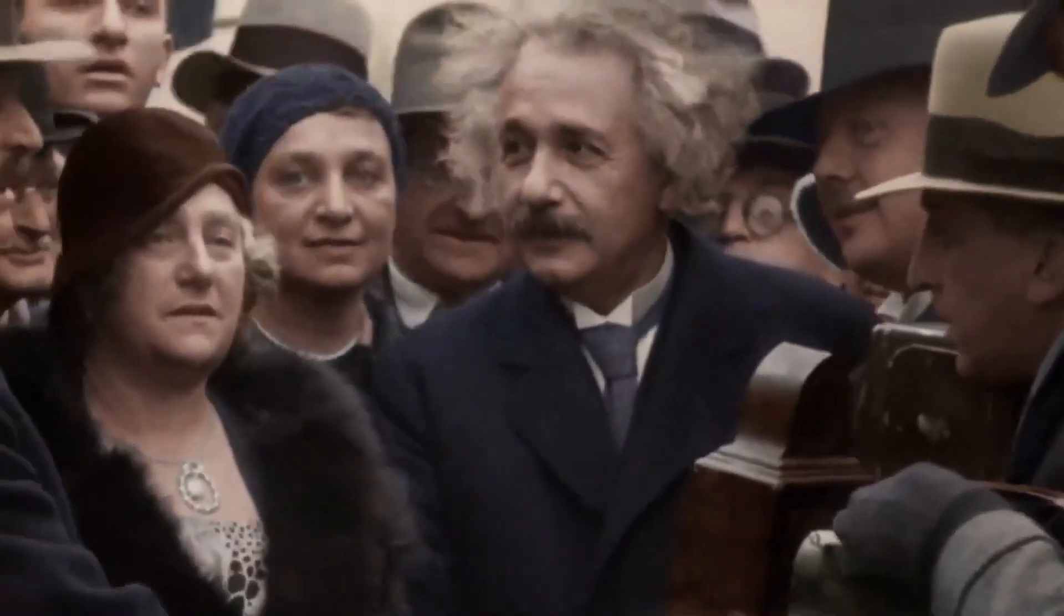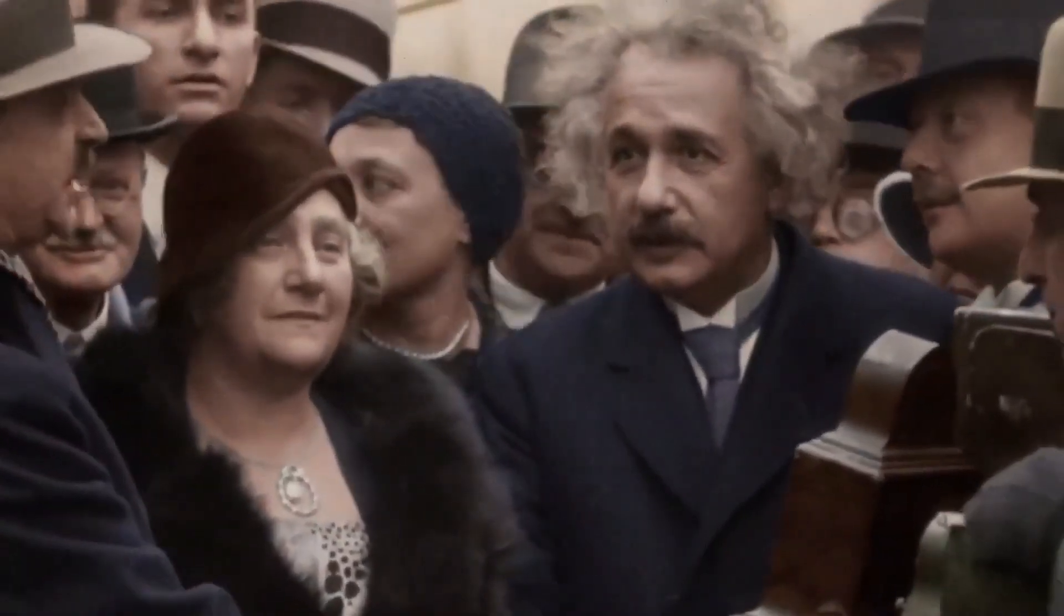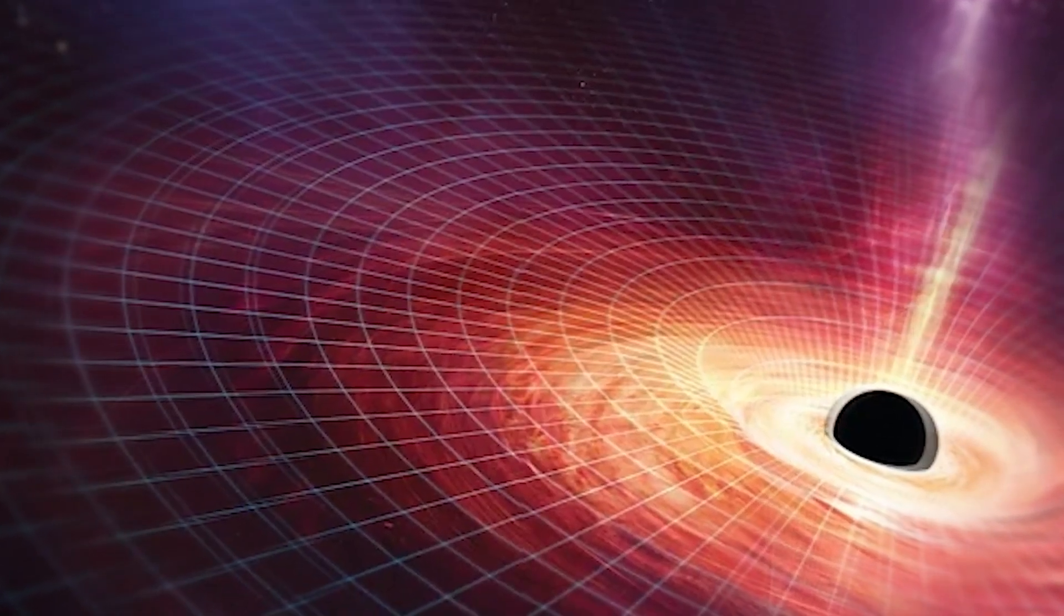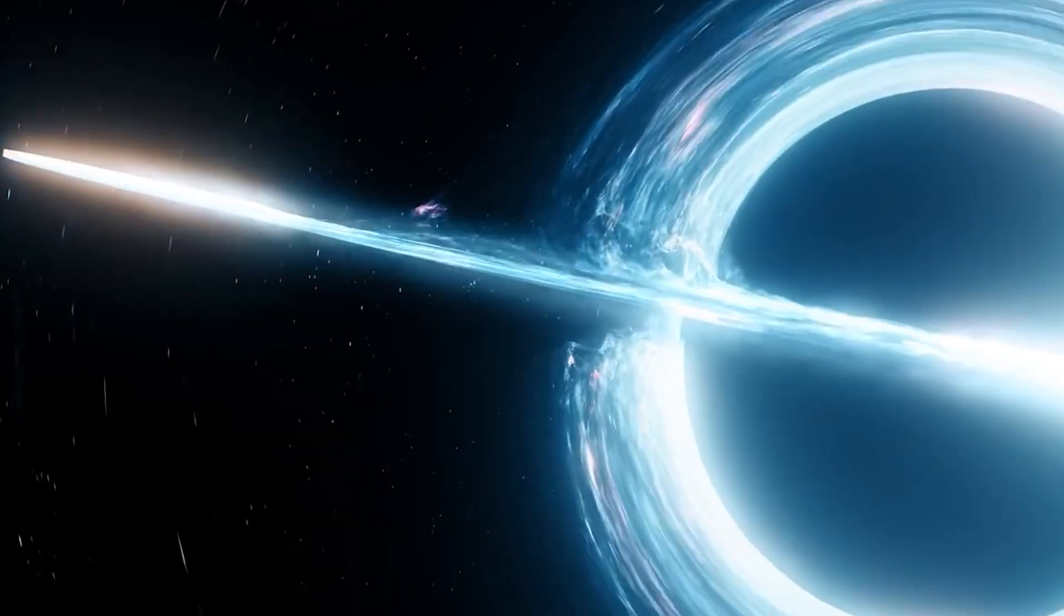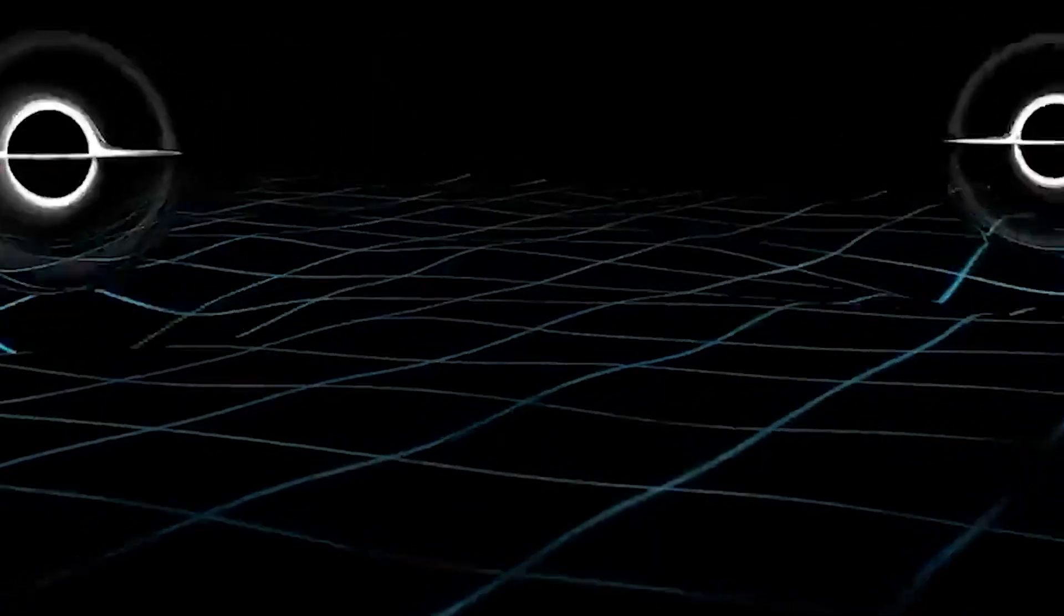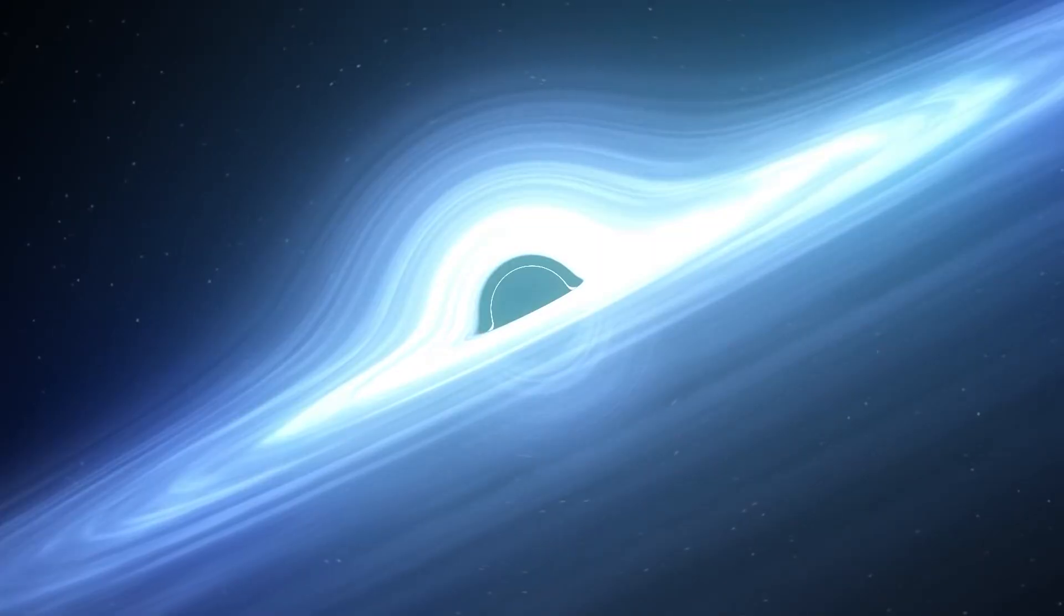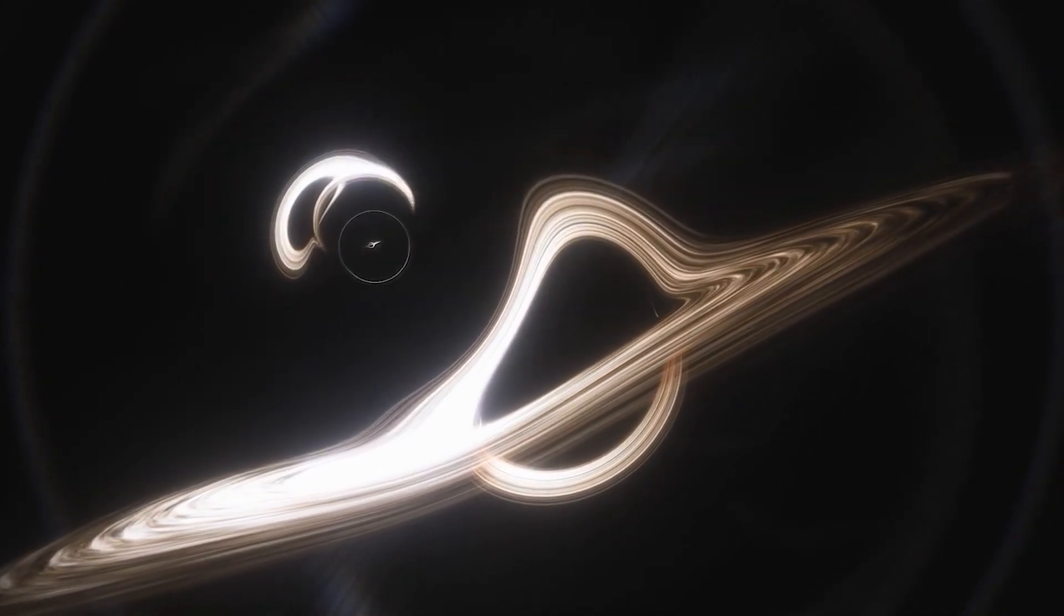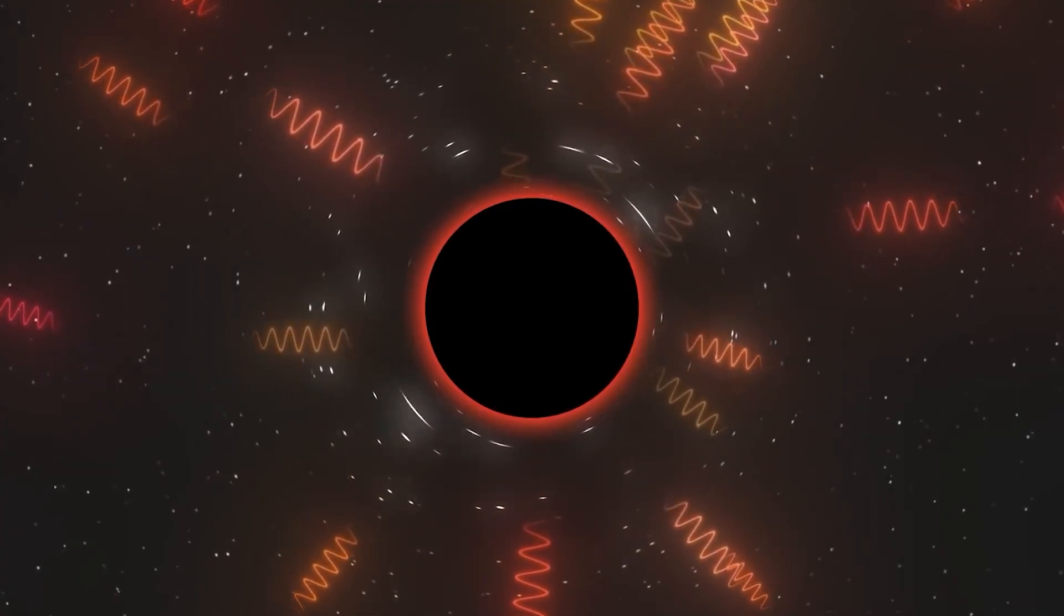in 1915, Albert Einstein published his General Theory of Relativity. For the first time, humanity understood that gravity wasn't a pulling force but the warping of space-time. According to Einstein, matter and energy tell space-time how to curve, and in turn, curved space-time tells matter how to move.